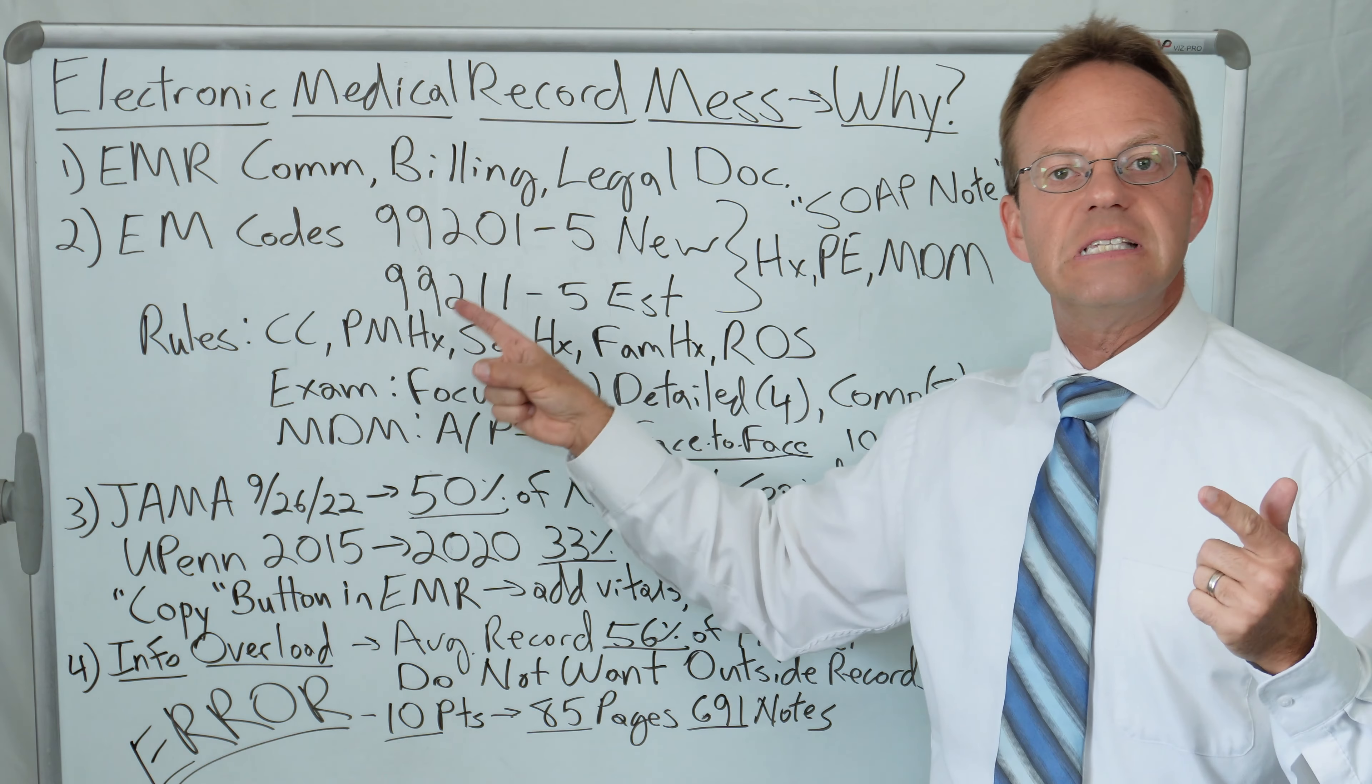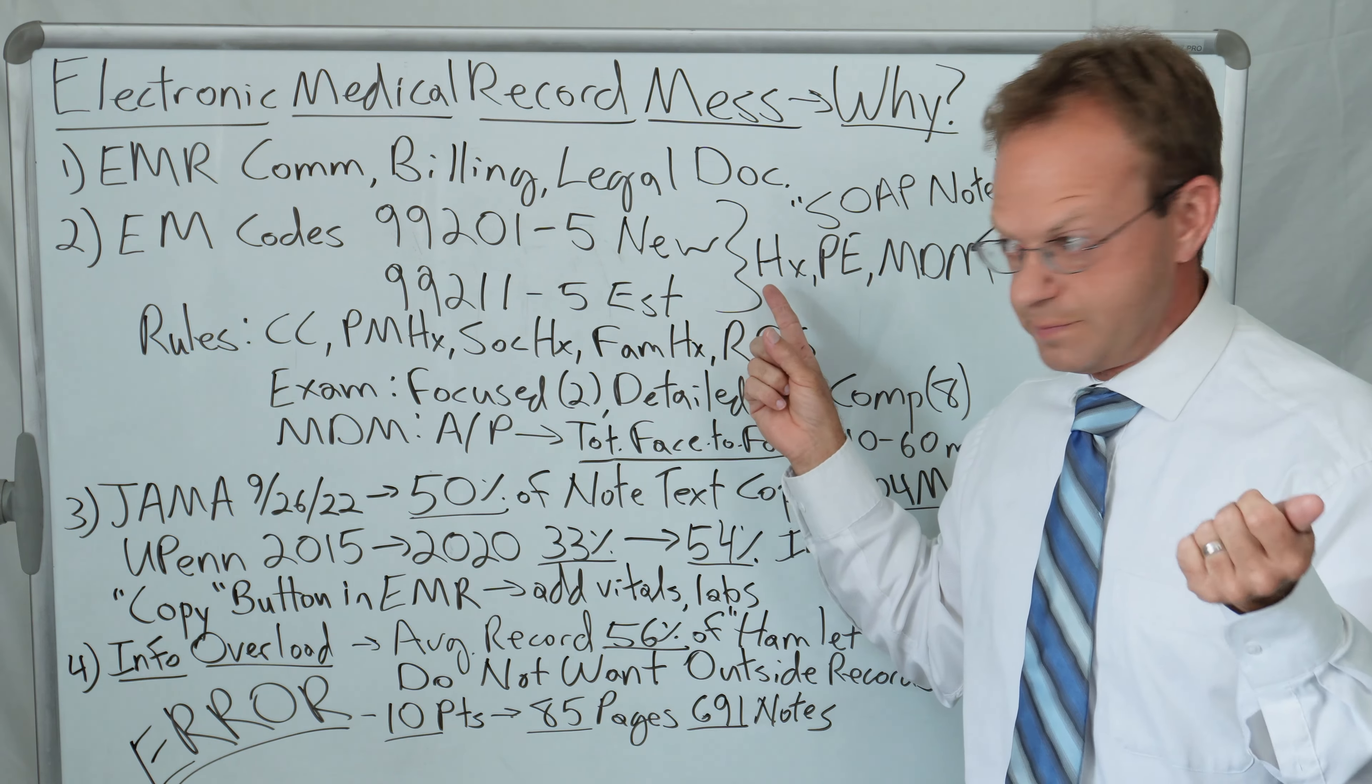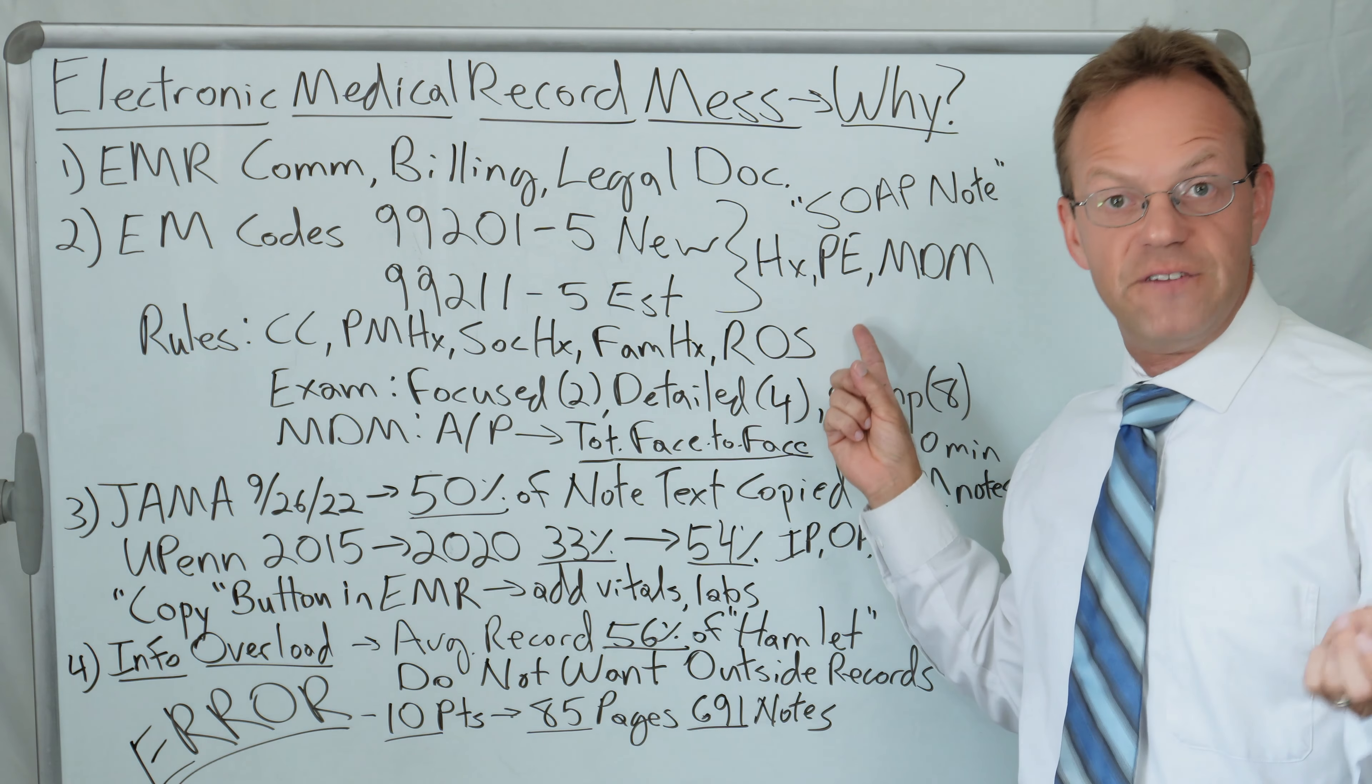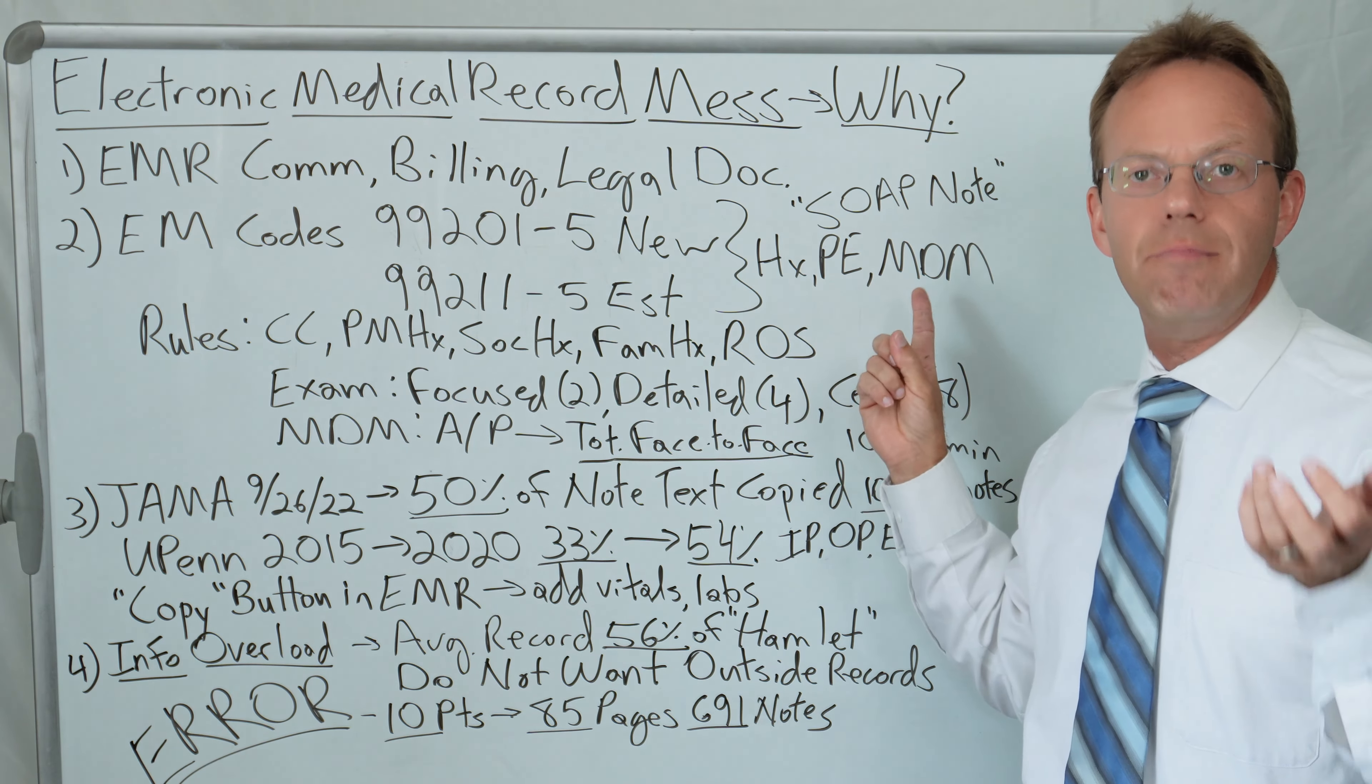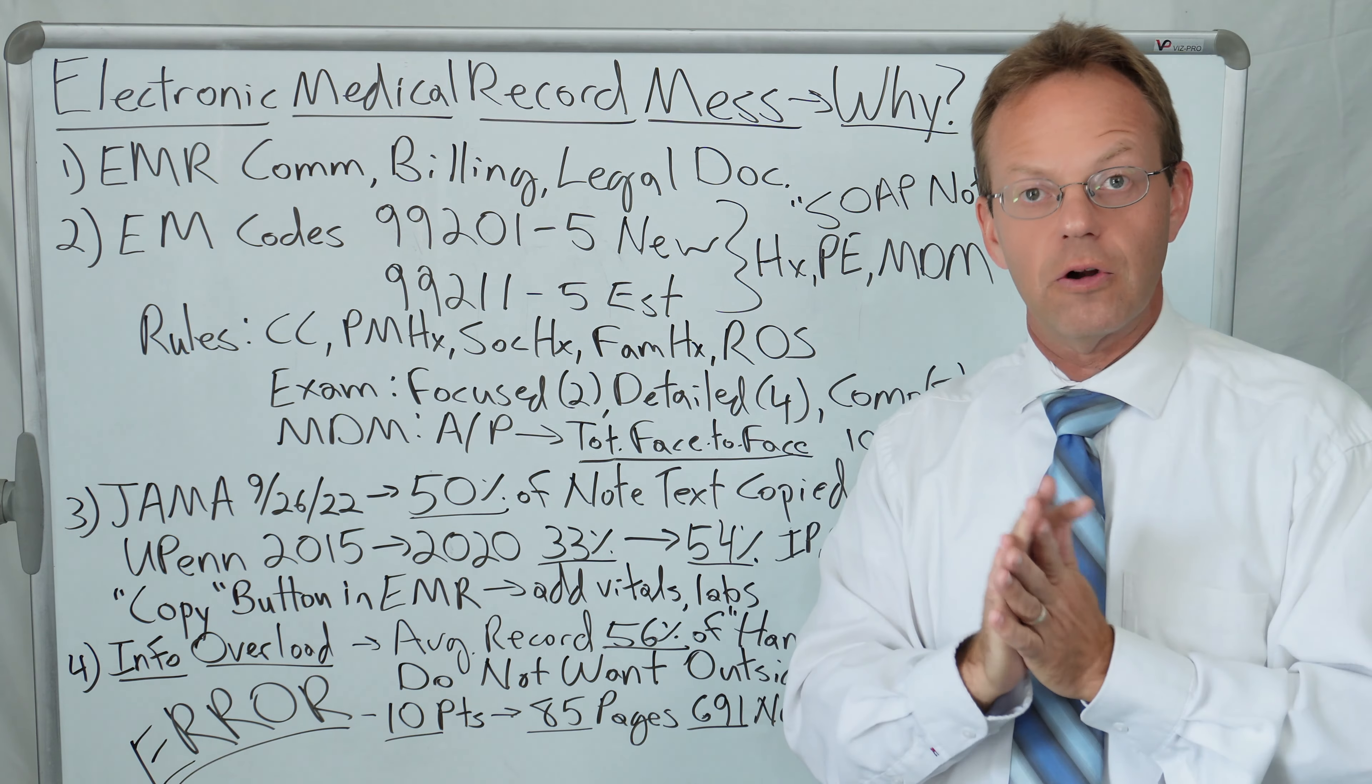In order to bill these E&M codes, there has to be documentation for history. Tell me about what's going on. You've got a sore throat, you've got a stomachache. There has to be a physical exam, listening to the heart, listening to the lungs, palpating the abdomen. And then there has to be what they refer to as medical decision-making.